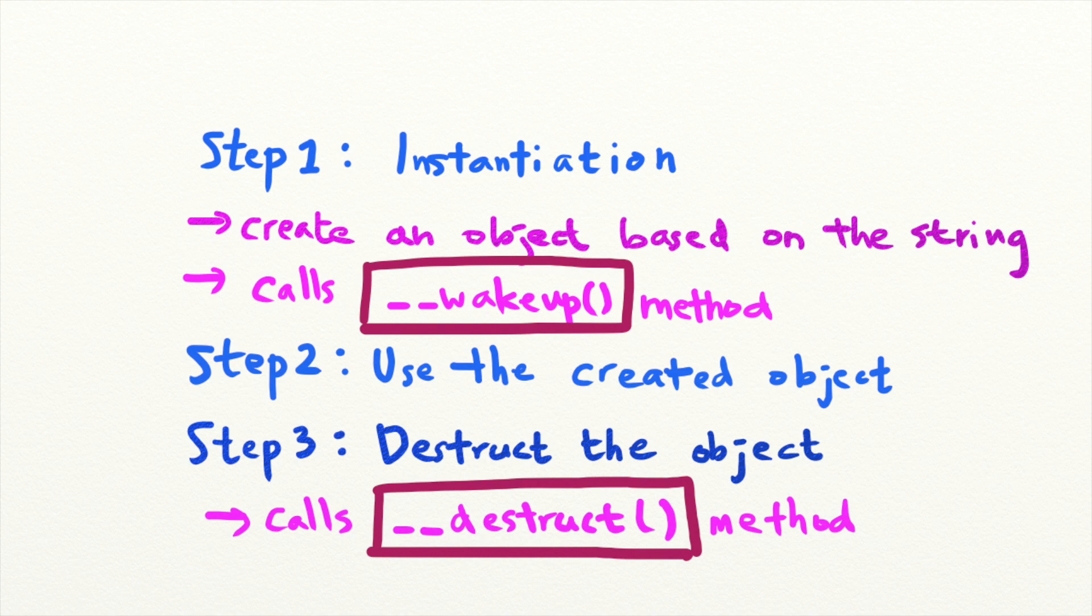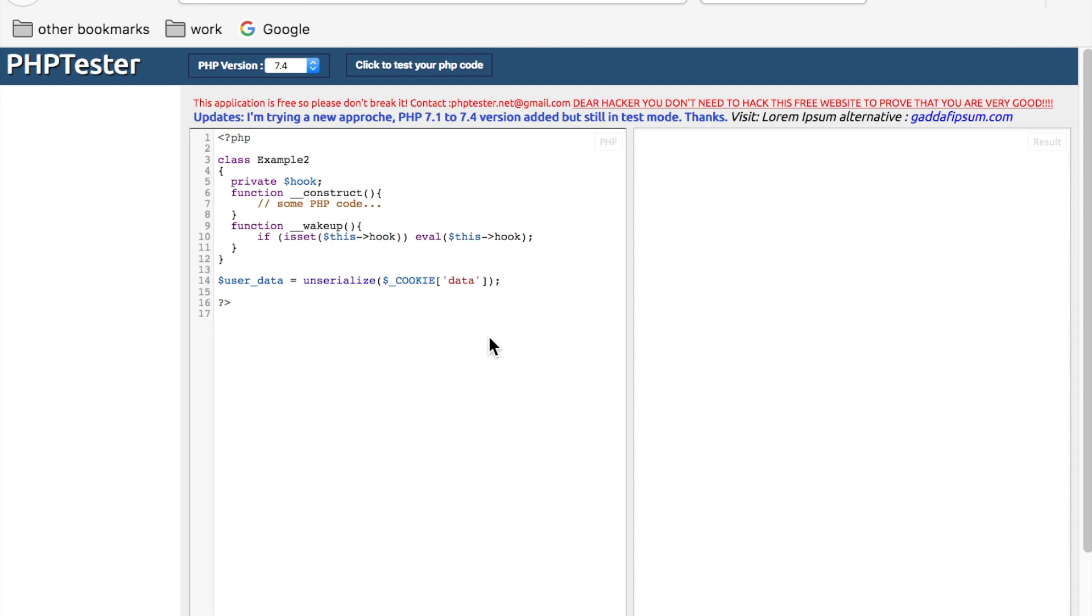For example, consider this vulnerable code snippet taken from the OWASP website. You can achieve RCE using this deserialization flaw because a user-provided object is passed into unserialize. And the class example2 has a magic function that runs eval on user-provided input.